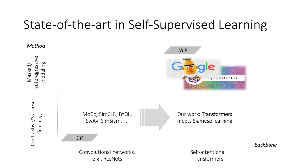There are two key elements in today's state-of-the-art systems for self-supervised learning. The first one is about the pre-training method. In NLP, masked or autoregressive modeling tasks, such as BERT or GPT, have proven to be very successful. On the other hand, in computer vision, contrastive or Siamese learning-based approaches also led to great advances in representation quality and transfer performance.